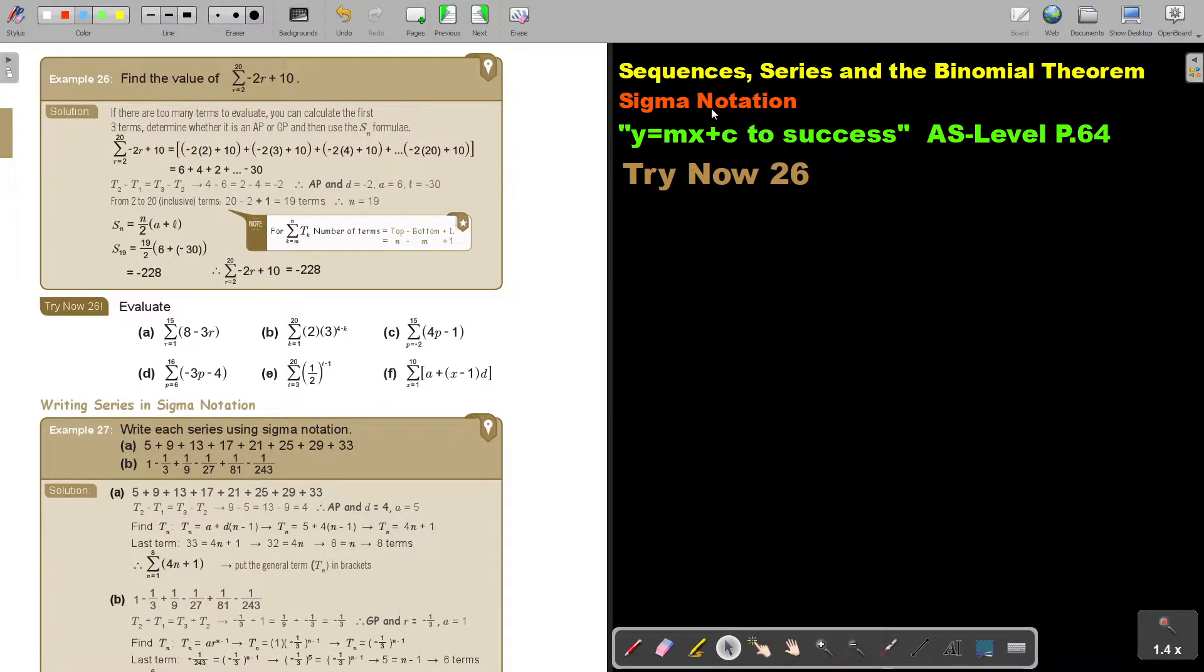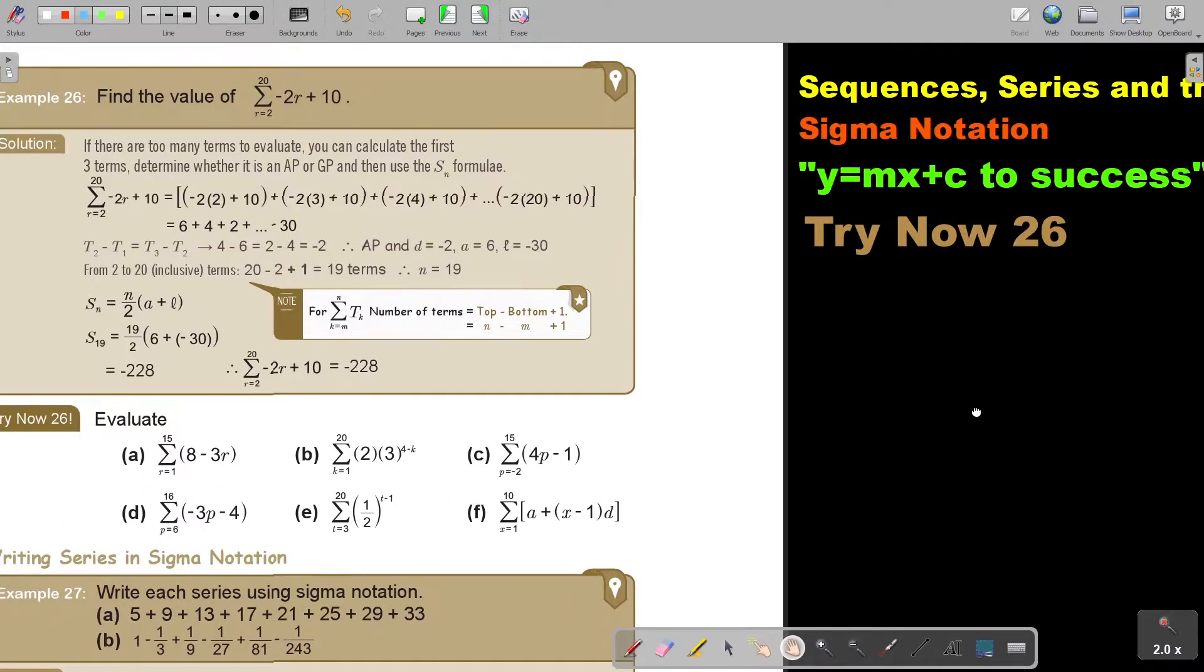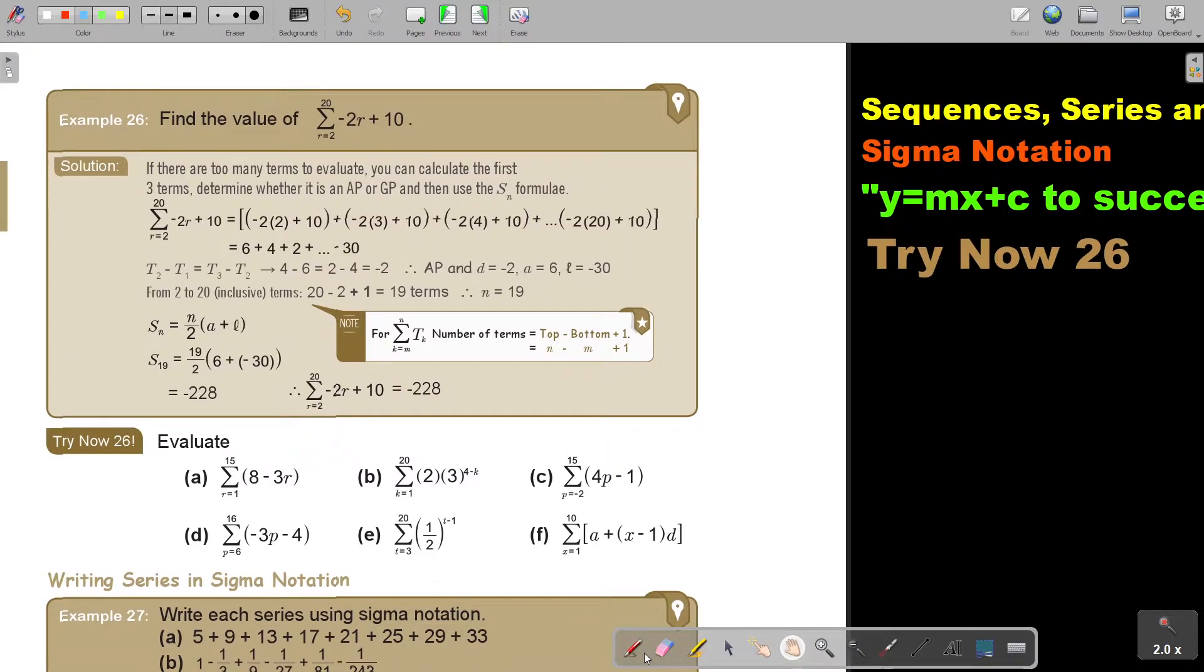In this video, we are going to continue with Sigma Notation. You will find this on page 64 in the Namibia AS Level Mathematics textbook, Y equals MX plus C to success. Find the value of, okay, I'm going to make it a bit bigger so you see better. Now in this problem, it's from 2 to 20. So if there are too many terms to write out, you can calculate the first three terms, determine whether it's an AP or GP, and then use the SN formula, either for AP or for GP.